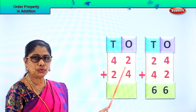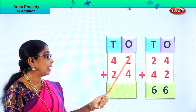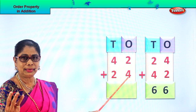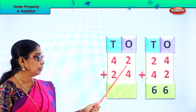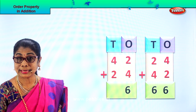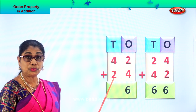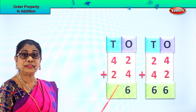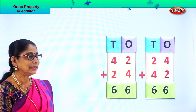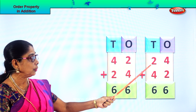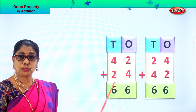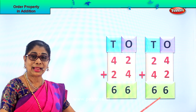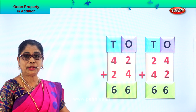Now we add 42 plus 24. Let's add the ones: 2 ones plus 4 ones — 4 in the mind, 2 on your fingers. After 4: 5, 6. So 2 plus 4 gives 6 ones. Then 4 tens plus 2 tens: 4, 5, 6 — 4 tens plus 2 tens gives you 6 tens. The answer is 66. Whether you add 24 plus 42 or 42 plus 24, your answer is 66. This is the order property of addition.